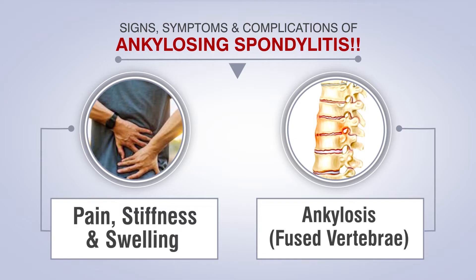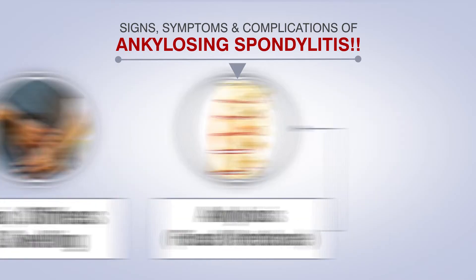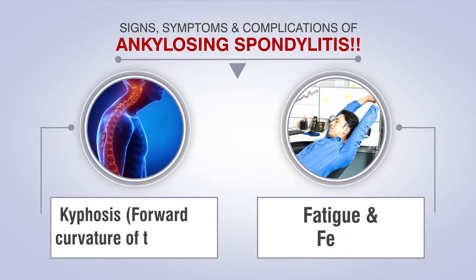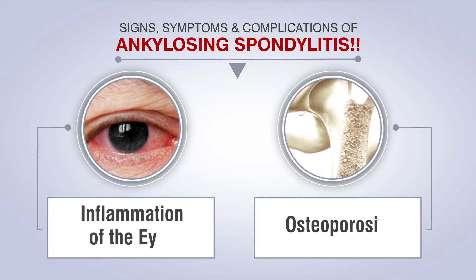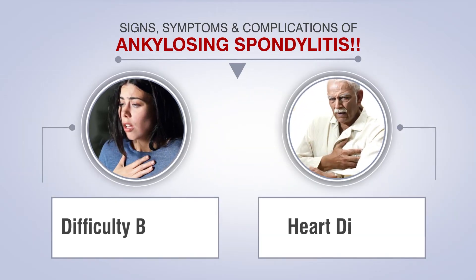Signs, symptoms, and complications of Ankylosing Spondylitis include: Pain, Stiffness and Swelling; Ankylosis or Fused Vertebrae; Kyphosis or Forward Curvature of the Spine; Fatigue and Fever; Inflammation of the Eyes; Osteoporosis; Difficulty Breathing; and Heart Disease.